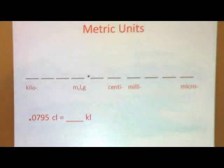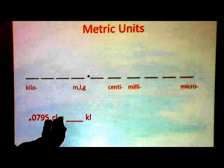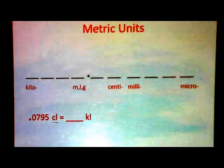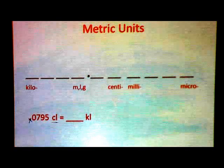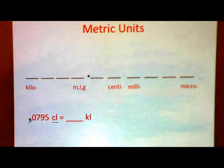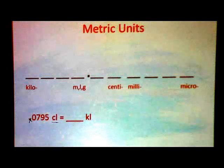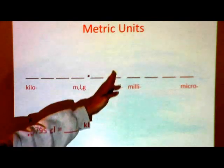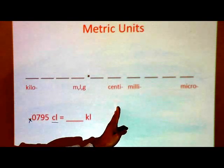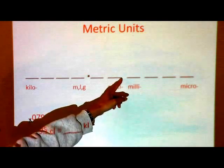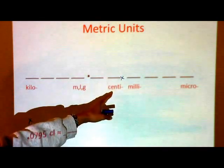Let's take this problem one at a time. Step one: start with what you have — you have CL. The decimal point is right here. Step two: draw your number line. Remember, you have to come up with this on your own on the test; it will not be provided. Find the column you're given — centiliter is in this column. When we are in this column, the decimal point is to the right, which is here.